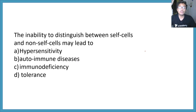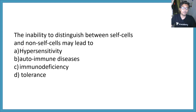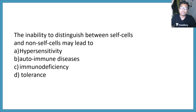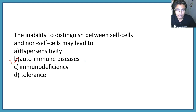The inability to distinguish between self-cells and non-self-cells may lead to: hypersensitivity, autoimmune diseases, immunodeficiency, or tolerance? When our immune system cannot distinguish self from non-self, it attacks our own body and cells — this is called autoimmune response. There is a tolerance mechanism that prevents the chances of autoimmune responses. If you want to learn more about that, click on the link in the I button.